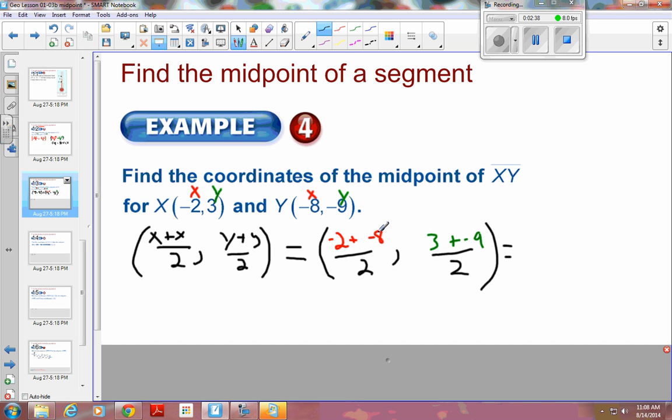So I'll combine my terms. And so negative 2 plus negative 8 would be negative 10 divided by 2. And 3 plus negative 9, so that would be 3 minus 9, which would be negative 6 divided by 2. Final answer would be negative 5 and negative 3. 10 divided by 2 is 5. 6 divided by 2 is 3.